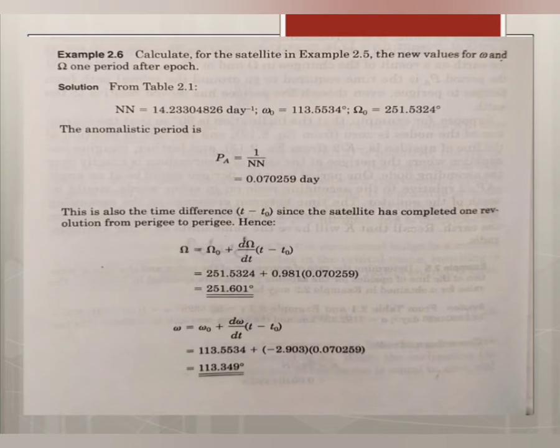The NN value is given, and ω₀ value is given, and Ω value is given. We've been asked for the new values of omega and ohm. These formulas are given by Ω = Ω₀ + (dΩ/dt)(t - t₀), and the same thing for omega also.